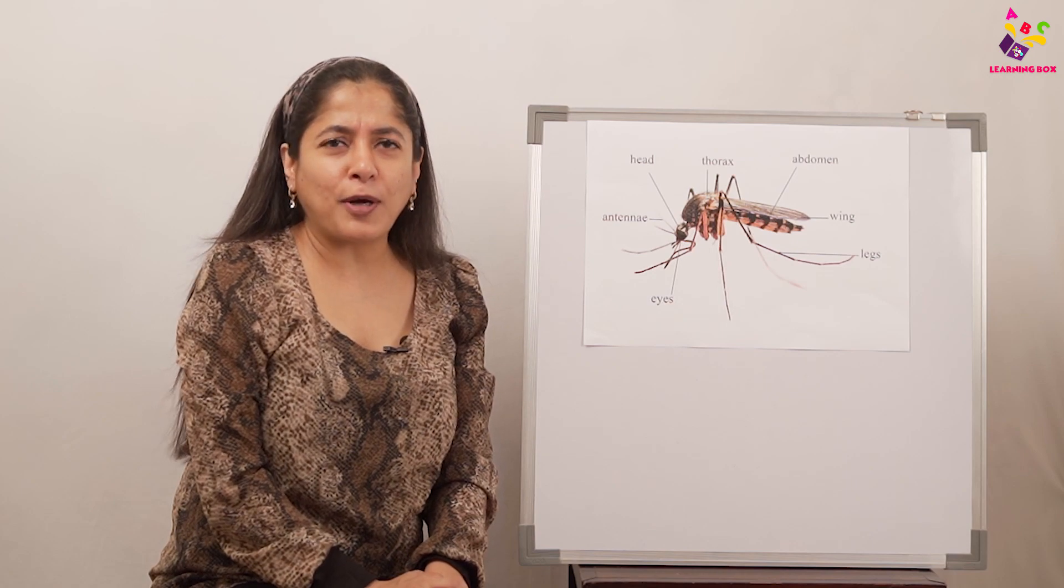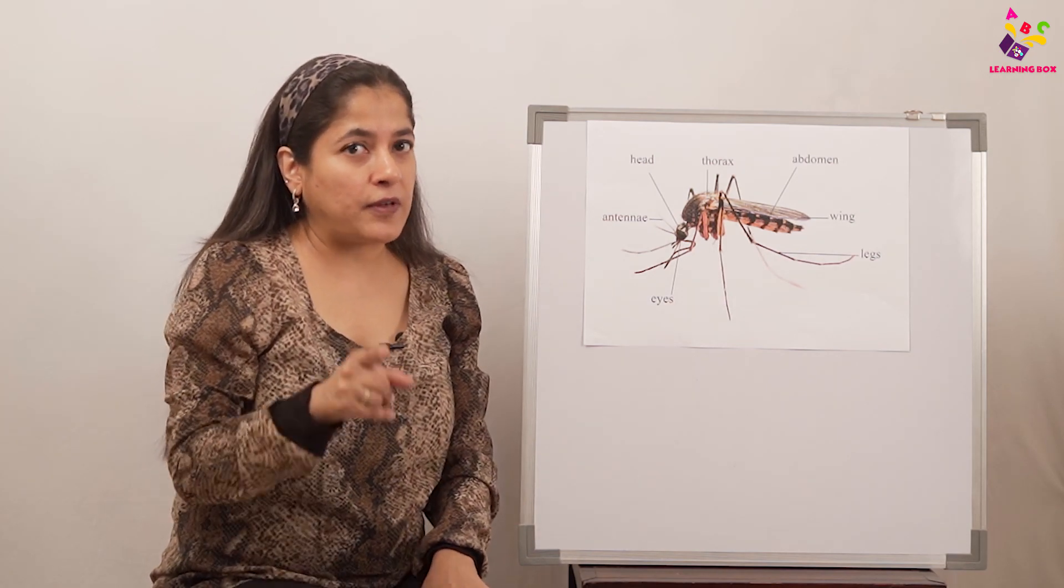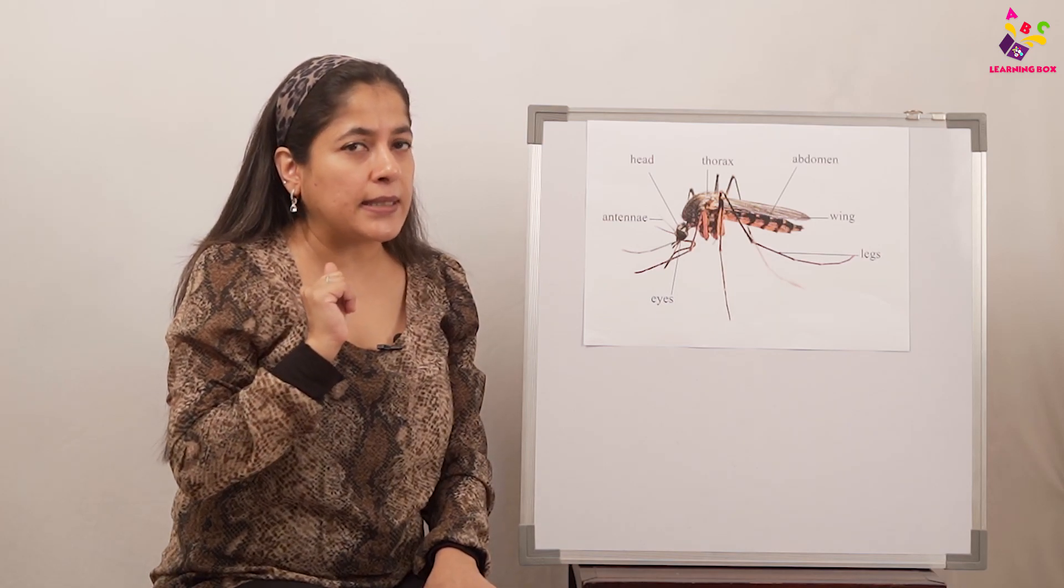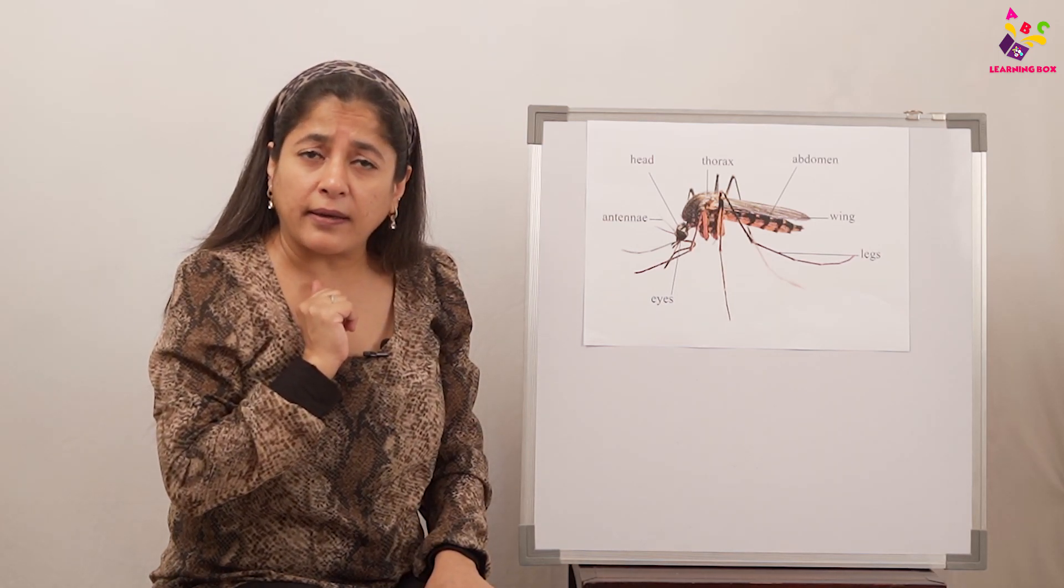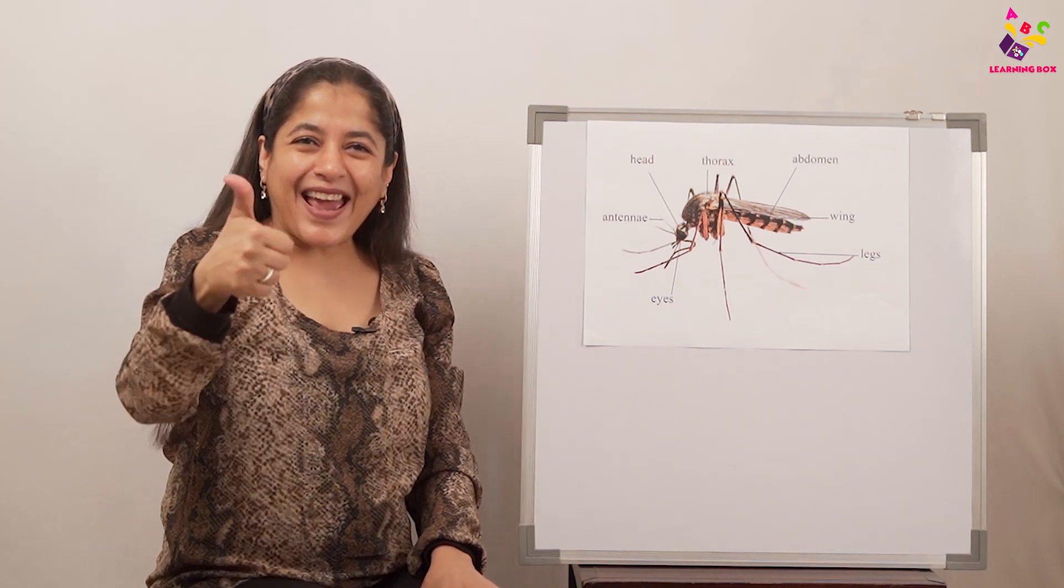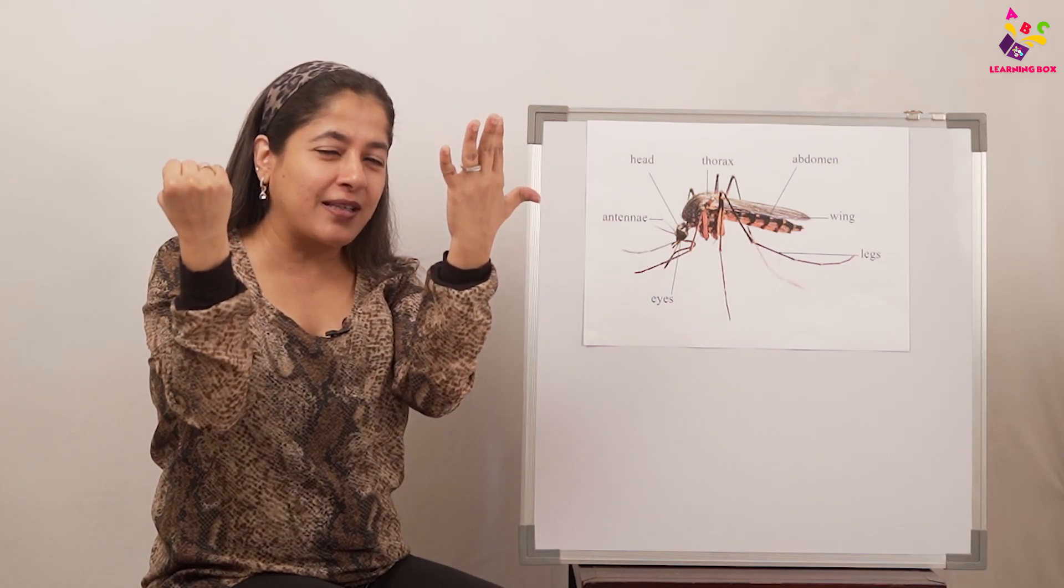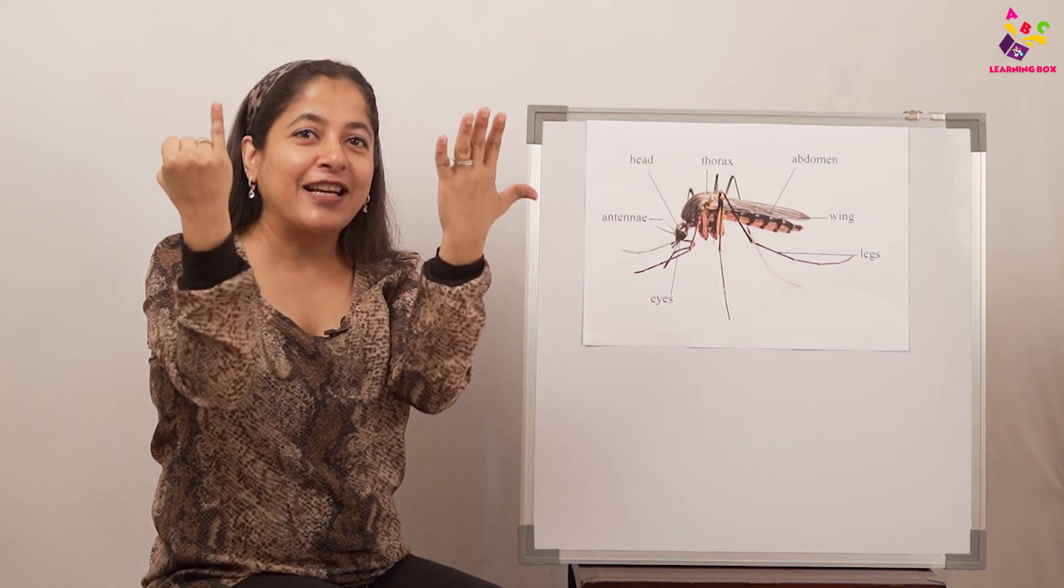And how many legs do insects have? Think, think, think. We have two legs, and we've learned about the spider. The spider has eight legs because the spider is an arachnid. But what about insects? How many legs should insects have? Excellent! Six legs. The mosquito has six legs.